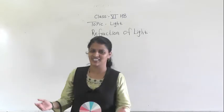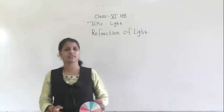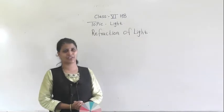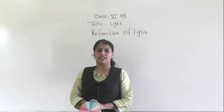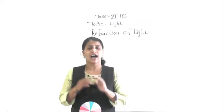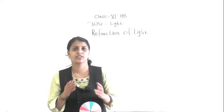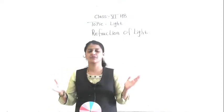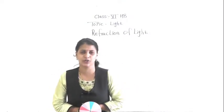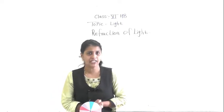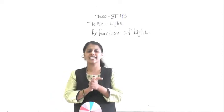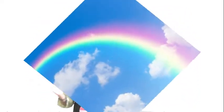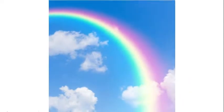Hello, my dear students. We are back with our physics video. In the last video, I explained how the rainbow is formed. The white light splits into seven different colors.